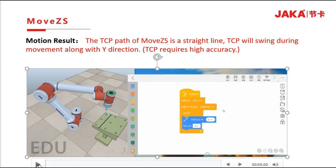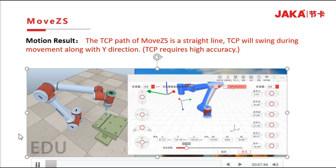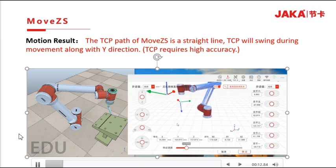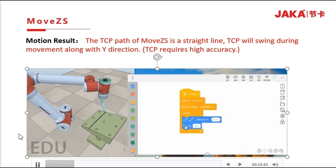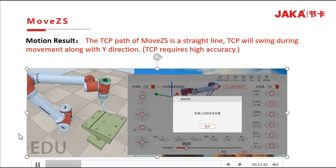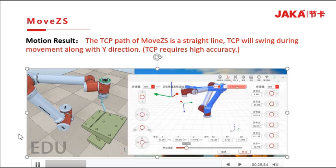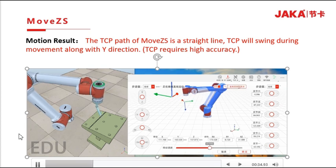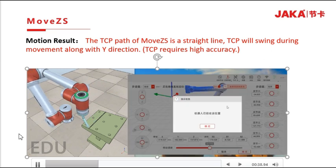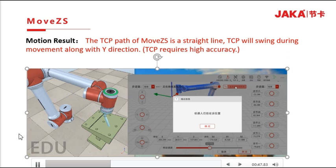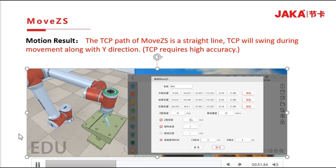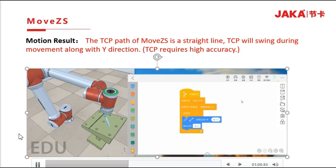Let's see the motion result of MOVEZS. First, we need to teach the start position of MOVEZS. Then, edit the end position. The end position is the terminus in the welding plane. Set the Z width as 10mm, speed 50, Z density as 20mm, and rotation angle set to 3 degrees.